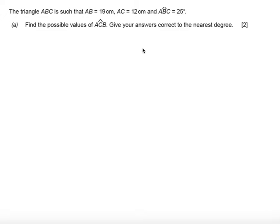In this question we're told the triangle ABC is such that AB is 19 centimeters, AC is 12 centimeters and angle ABC is 25 degrees.